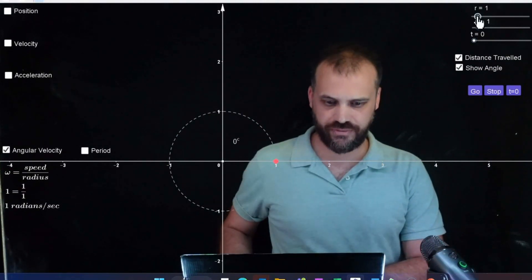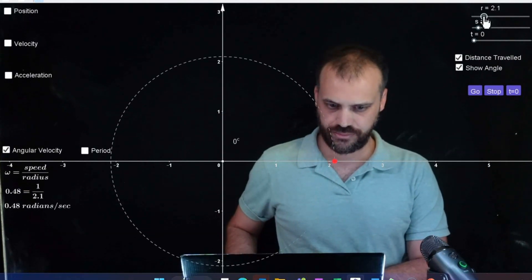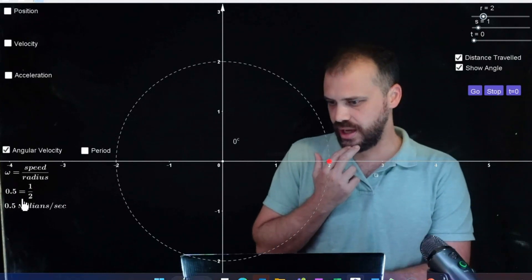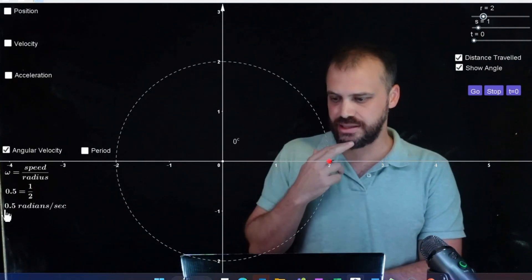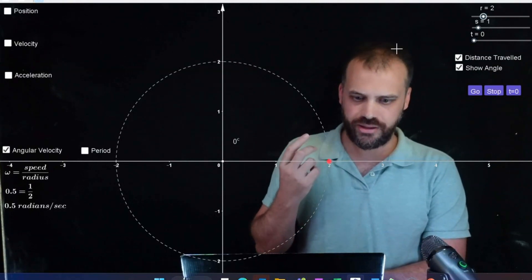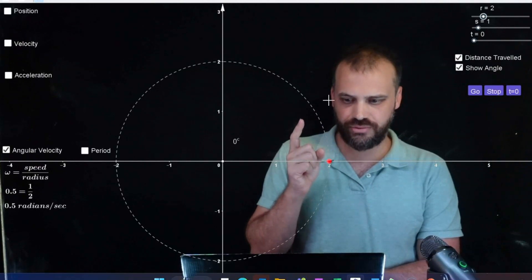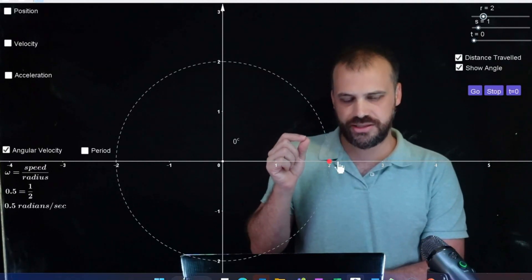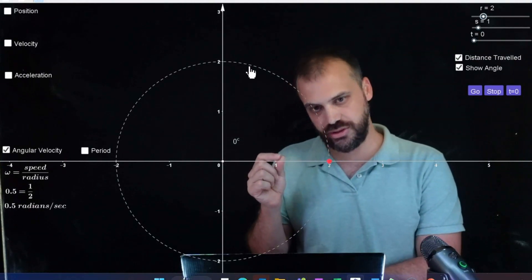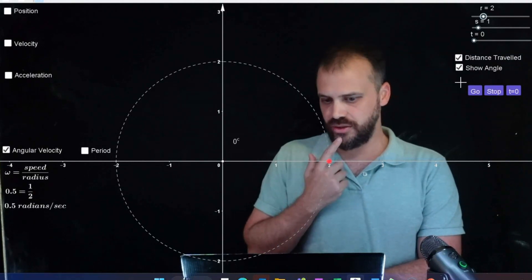So let's change the radius of the circle. Let's change it to 2. Okay. Now we can see now that our angular velocity is 0.5 radians per second. Why? Well, we're still moving at one meter per second around the circle, but the radius is equal to 2 now. So that means one radian is equal to 2 as well, but we're only traveling at one per second.